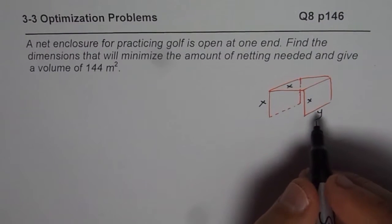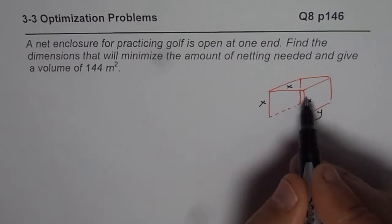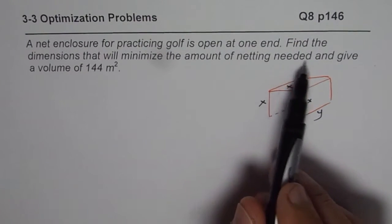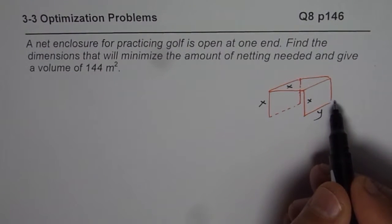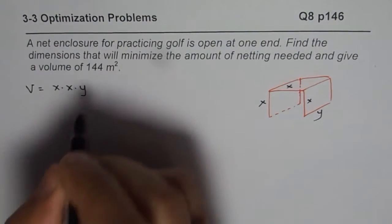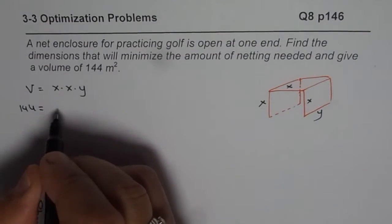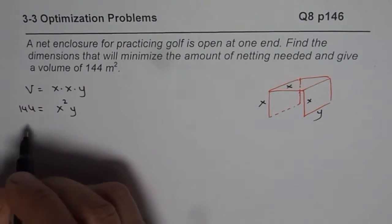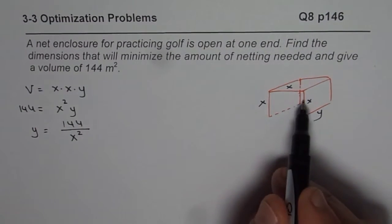In that case, the area occupied by this will be x square y. So volume for this netting is x times x times y and we are given volume as 144 meter square. So we could write this as 144 equals x square y and from this relation we can write y in terms of x. So we can say y equals 144 over x square. So we have a relation between the two variables defined.